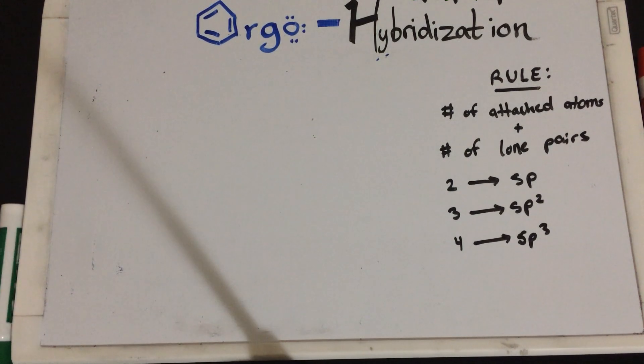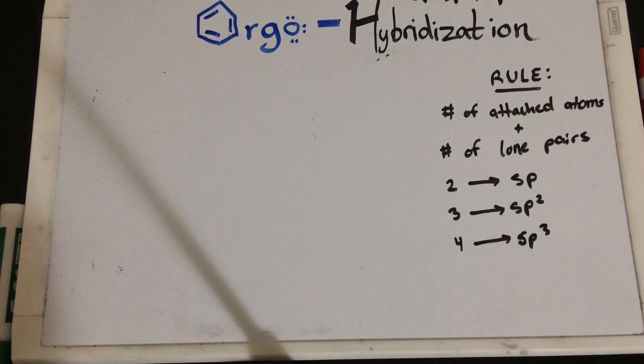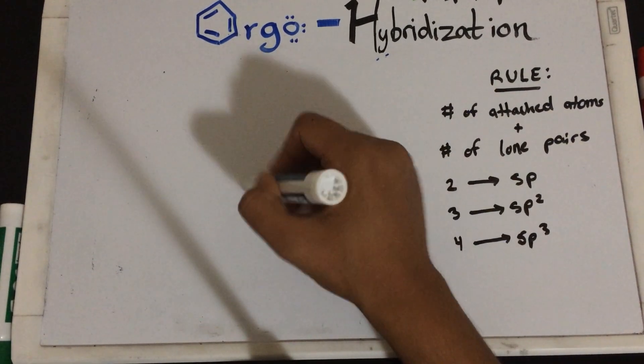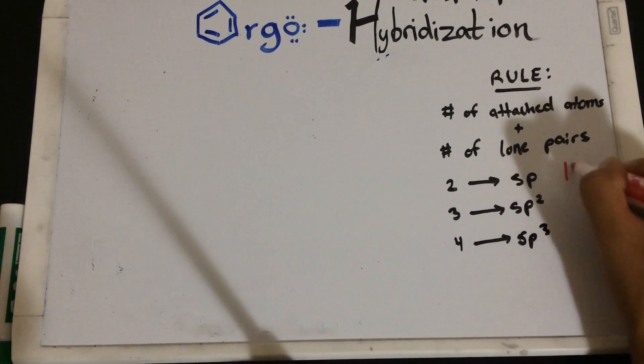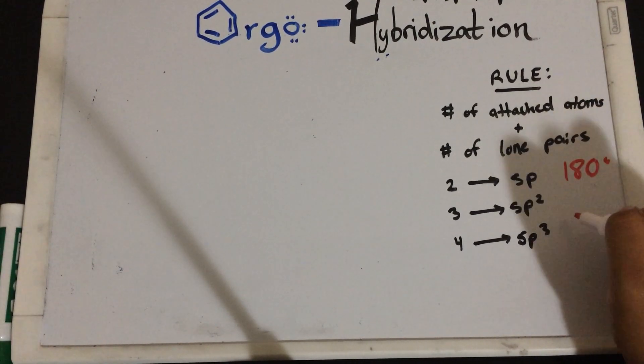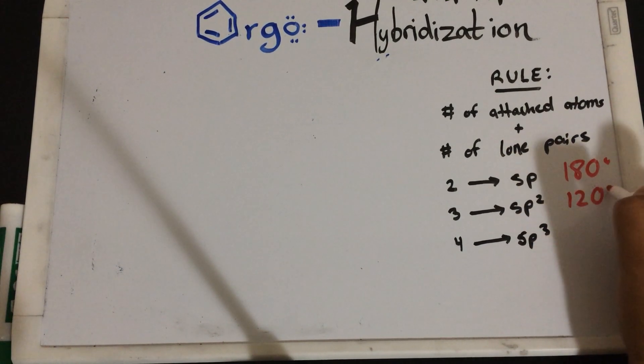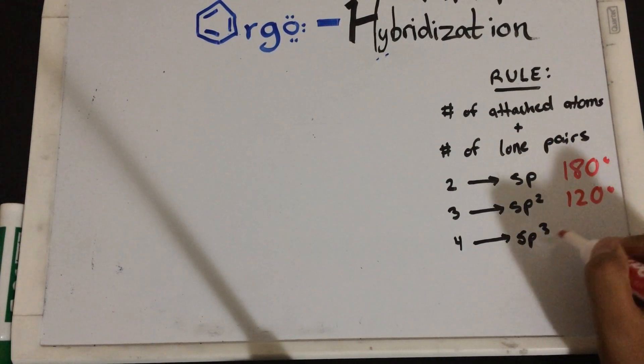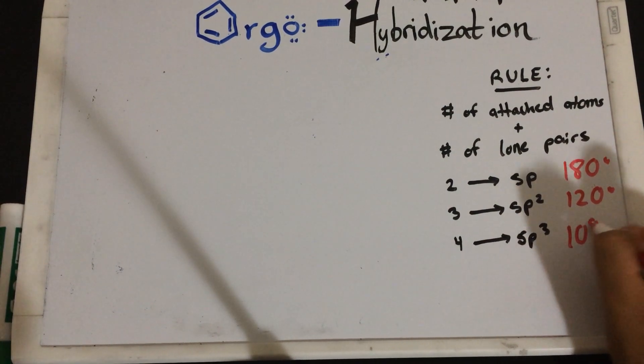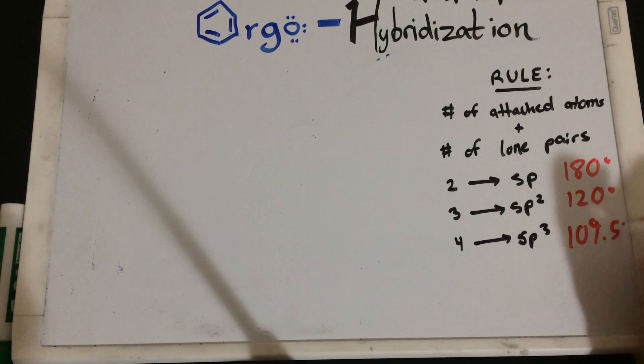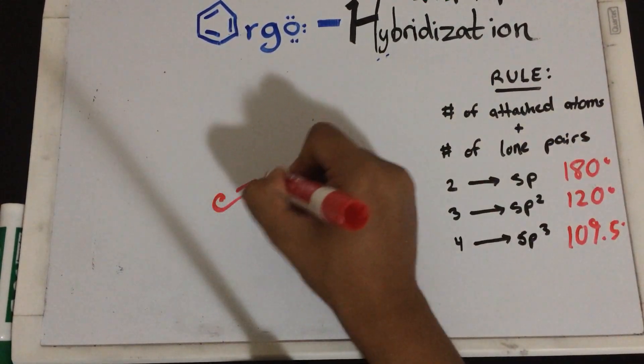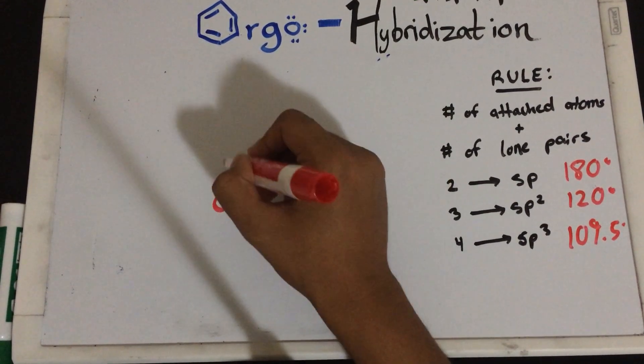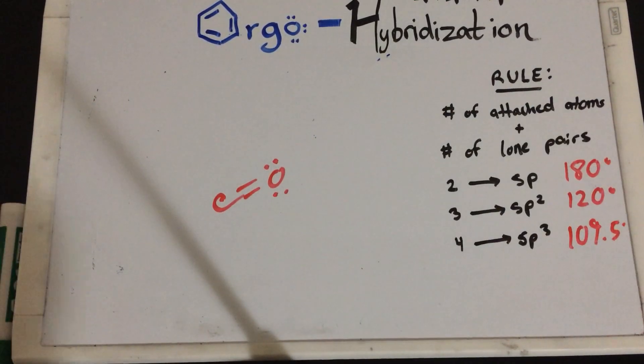When we're talking about bond angles, anything that's a SP hybridization, like the carbon monoxide, it's usually at 180 degrees. Anything that's SP2, it's usually 120. And anything that's SP3, the bond angle is 109.5. So, for SP, you have carbon monoxide. This bond angle is 180 degrees, like you can see, it's flat 180 degrees.